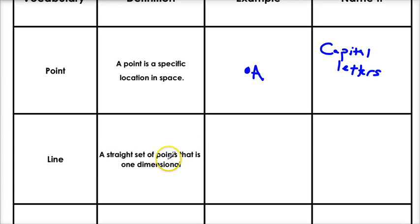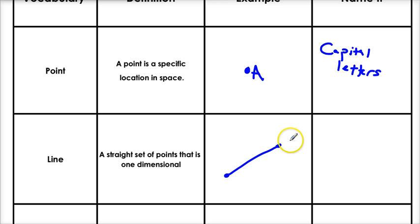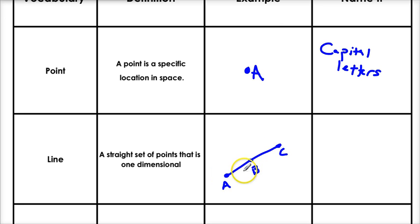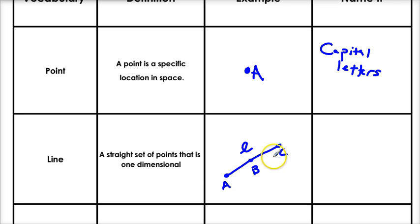Next thing: a line. A line is a straight set of points that is one dimensional. That's a fancy way of just saying — boom — that's my line. In a line, remember, it's just a set of points. Just imagine there's an infinite amount of points going on and on. Now, how do we name a line? There's a few ways. One, we can say it like this — let's name three of the points on it: A, B, and C. I'm also going to put a scripted letter there, because there are two ways to name this line.